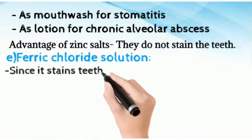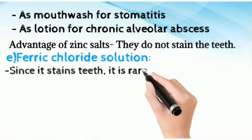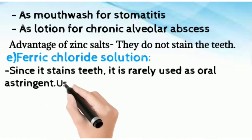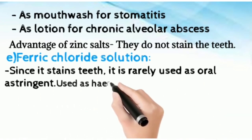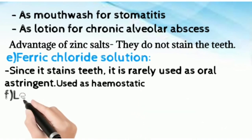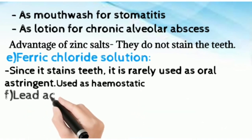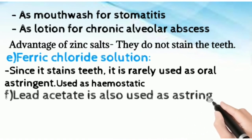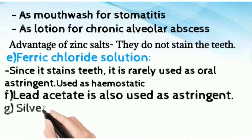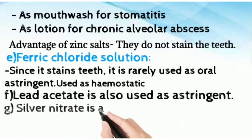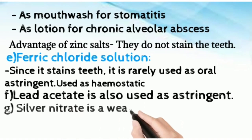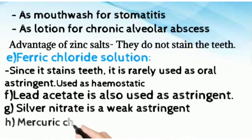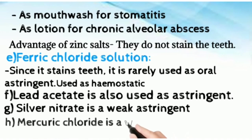Then ferric chloride — it is going to stain the teeth, and it is rarely used as an oral astringent. Lead acetate is also used as an astringent. Then, silver nitrate is a weak astringent. You also have mercuric chloride, which is again a weak astringent. So, silver nitrate and mercuric chloride are weak astringents.